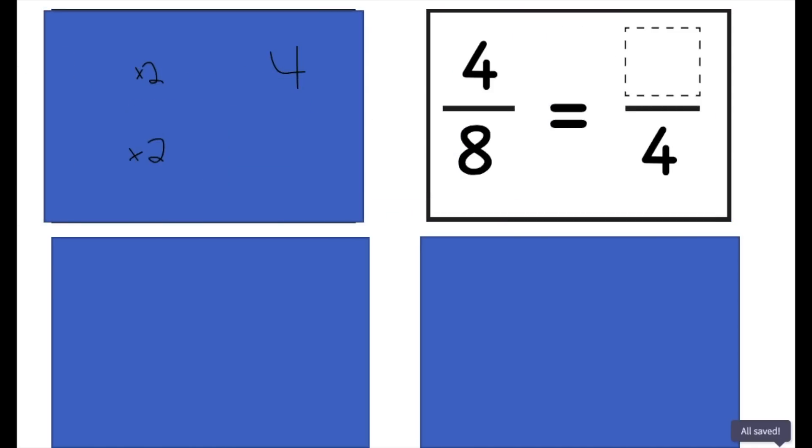So moving on, if I have another fraction where I'm trying to find a blank, which in this case is a numerator, I'm looking at what I know. So I see things that are side by side. Now does 8 times anything equal 4? Well, no, that's not possible because 8 times 1 is the smallest thing we could do.